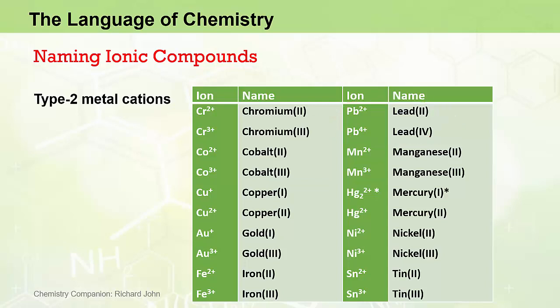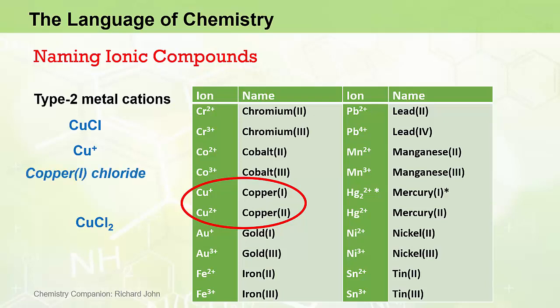Considering another pair of type 2 cations — the copper 1 and copper 2 ions — we can see the importance of naming the ions with the correct Roman numeral. For example, copper can form two different ionic compounds with the chloride ion: CuCl and CuCl2. CuCl contains the copper 1 ion, and the compound is therefore named copper 1 chloride. CuCl2 contains the copper 2 ion, and is therefore named copper 2 chloride.